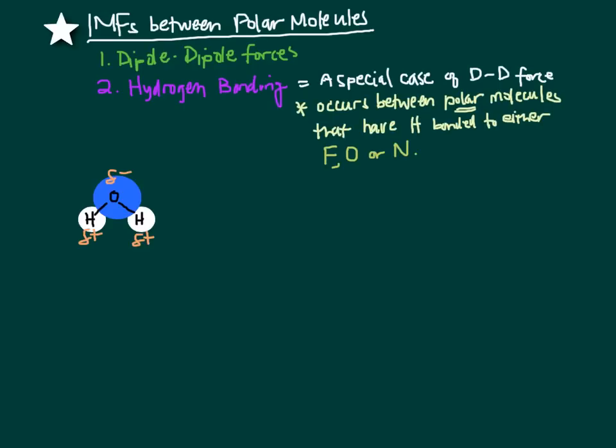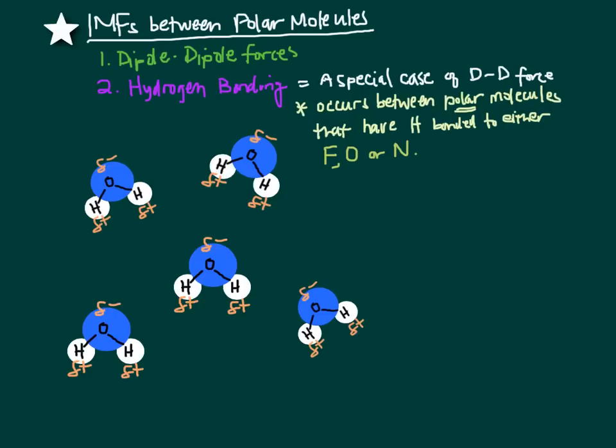As an example, let's use a water molecule. Water is a very polar molecule, and when you have a collection of water molecules, the negative end of one water molecule will be attracted to the slightly positive end of another water molecule.